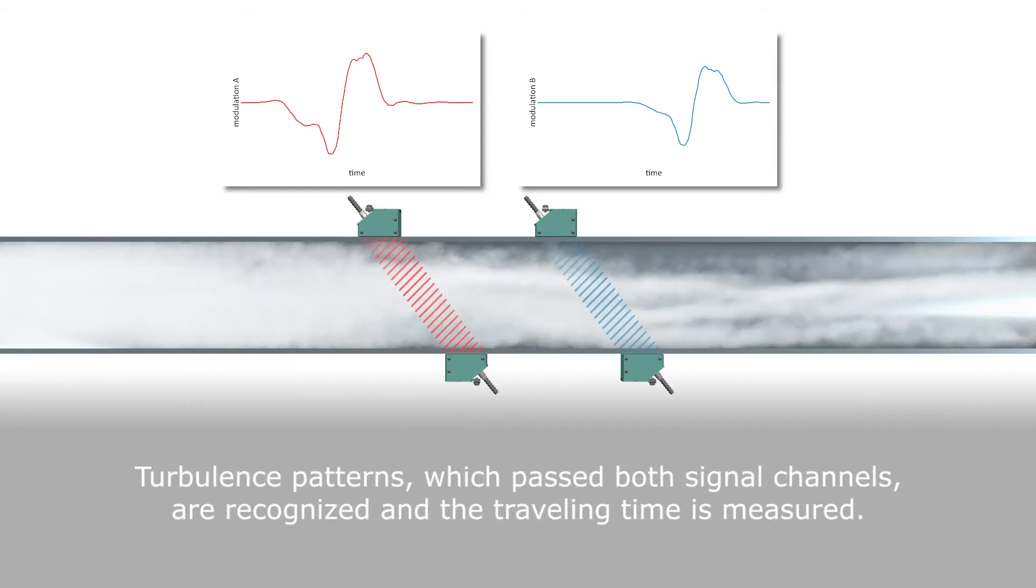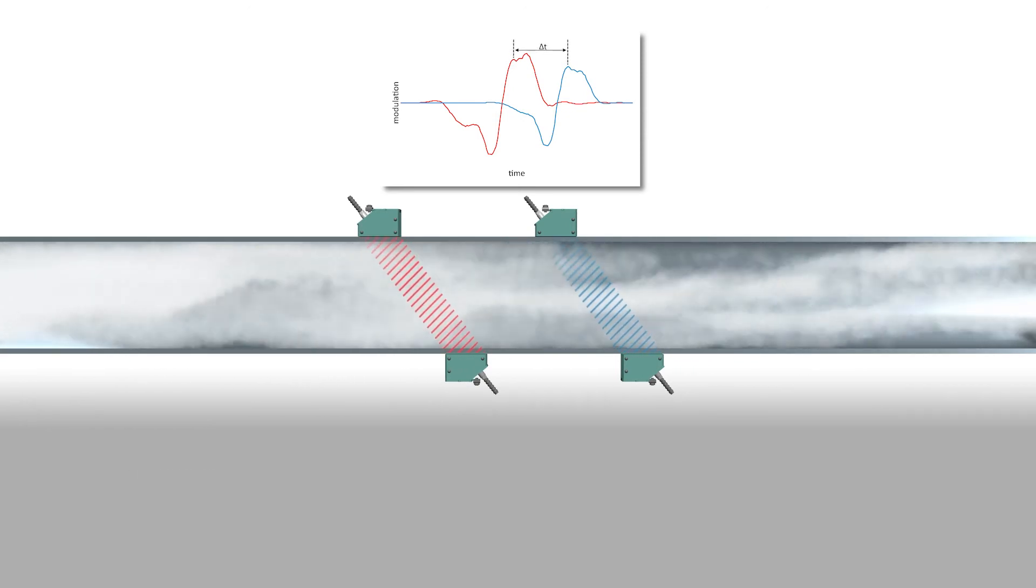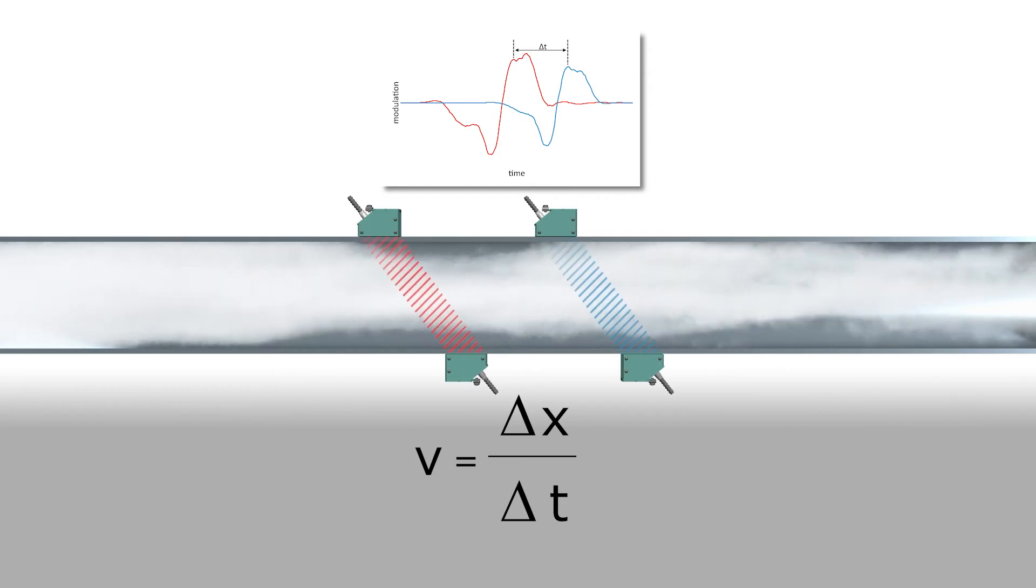The time it took for the specific turbulence pattern to pass from channel A through channel B can be found from the time difference Delta T. The equation for flow velocity calculated by the time difference and channel distance may be visualized with this equation.